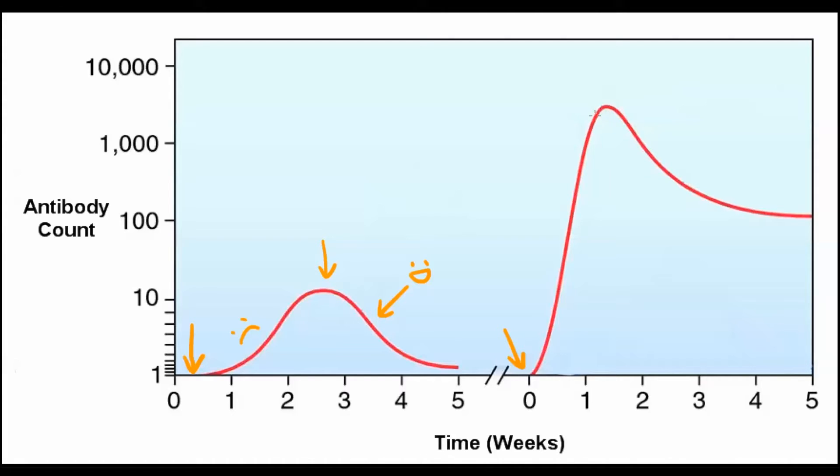We call that slow first response the primary immune response, and the fast second one the secondary immune response. So, we call your new ability to resist the old infection and stage a rapid secondary immune response acquired immunity. And the way it comes about is pretty cool.